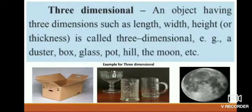An object having three dimensions such as length, width, height, or thickness is called three-dimensional. Examples include a duster, box, glass, pot, hill, the moon, etc.